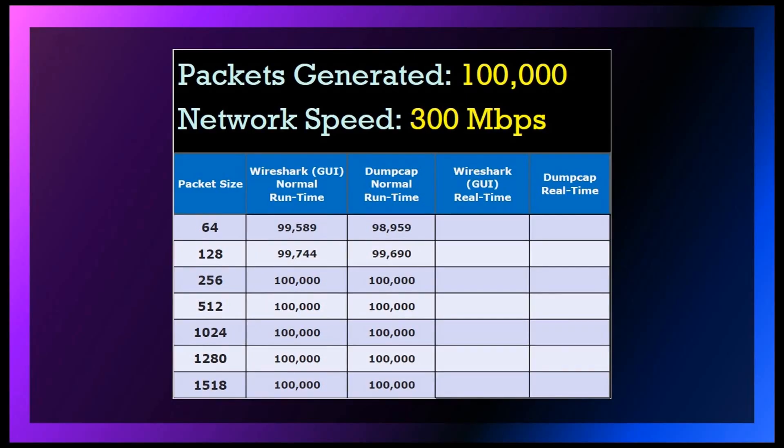We increased the network speed to 300 megabits per second. For 64-byte packet size, Wireshark captured 99,589 packets out of 100,000, whereas DumpCap captured 98,959. For 128-byte packet size, Wireshark captured 99,744 packets out of 100,000 and DumpCap captured 99,690 out of 100,000. Packet sizes between 256 bytes and 1518 bytes, all 100,000 packets were captured.